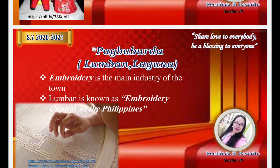Next is Pagbuburda — embroidery — first in Lumban, Laguna. Embroidery is the main industry of the town, and Lumban is known as the embroidery capital of the Philippines. They use fine jusi and piña cloth, embroidered by hand. The finished product is worn by males as Barong Tagalog and by females as Saya Filipina. The Burdang Lumban Festival celebrates the beautiful embroideries that contributed to the growth of Lumban's economy and preservation of culture.